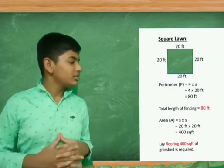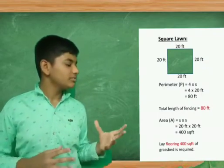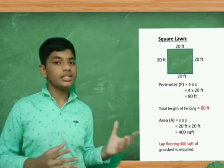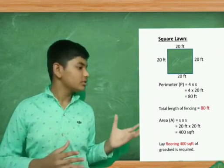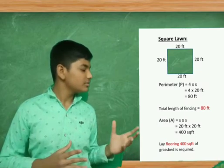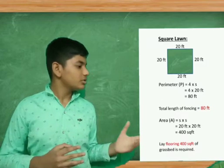Each side of the square garden is 20 feet. Therefore perimeter of square garden is 4 into 20, which is 80 feet. Therefore total length of fencing is 80 feet. To find its area, the square garden area is side into side, which is 20 feet into 20 feet, which is 400 square feet. We need 400 square feet of grass bed to lay the flooring.